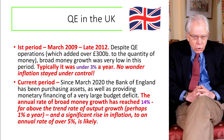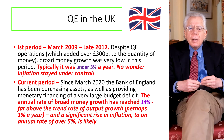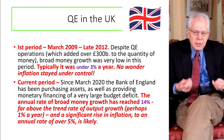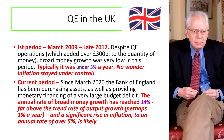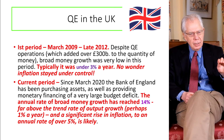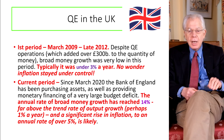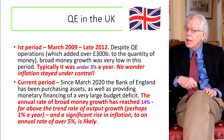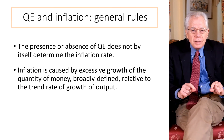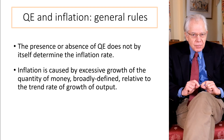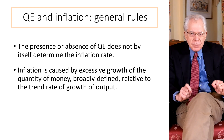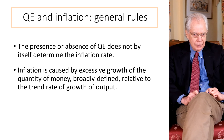So what's crucial in this statement: inflation is caused by excessive growth of the quantity of money — broadly defined. This explains why QE didn't cause inflation in the 2010s and is causing inflation now and will continue to do so for another two or three years. It isn't the presence or absence of QE that determines inflation; what's important is the rate of growth of the quantity of money. Thank you.